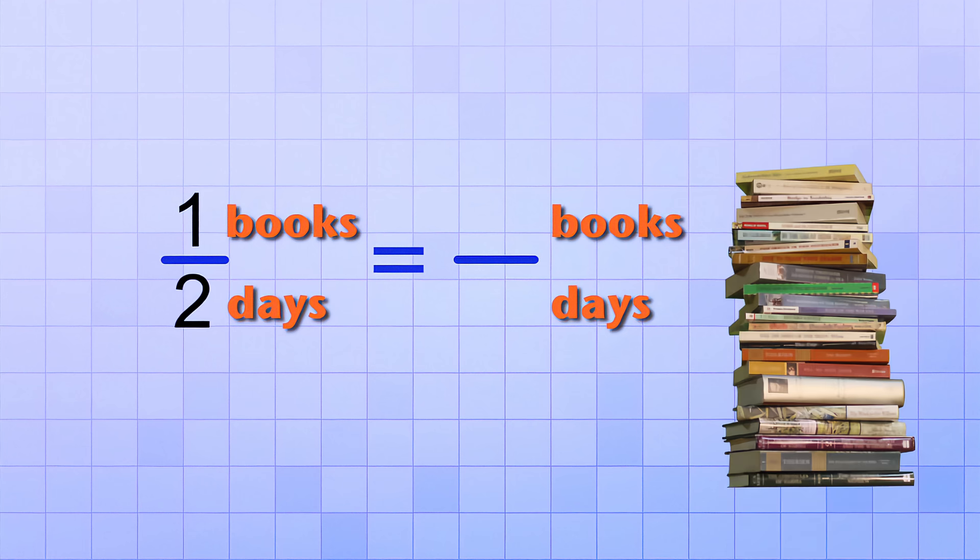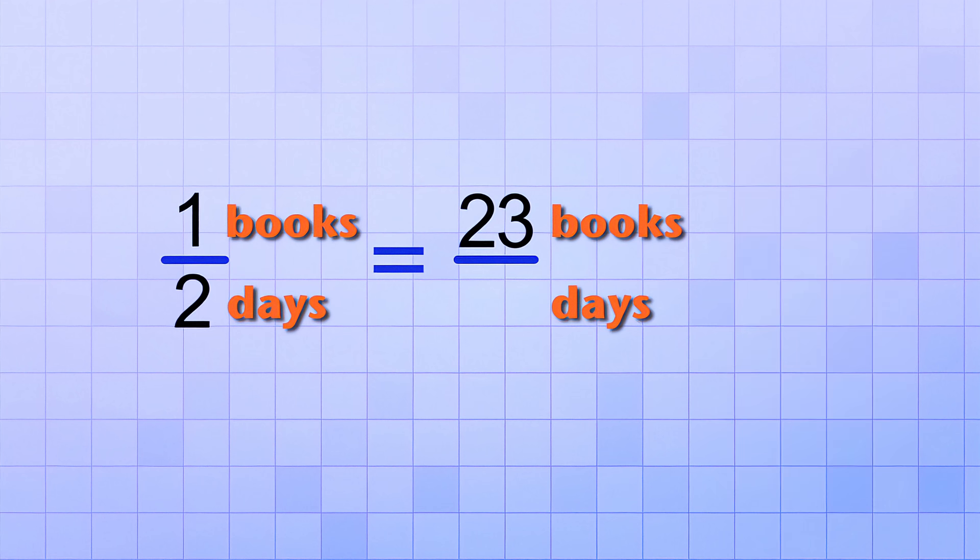The key in setting up that equivalent ratio is to make sure that the units are the same as the first ratio. Books on the top and days on the bottom. We know that the number of books that they want to read is 23, so that goes on top. But the number of days it will take is unknown. So instead of putting a number there, we're going to put the letter N there temporarily to stand for the number that we don't know.